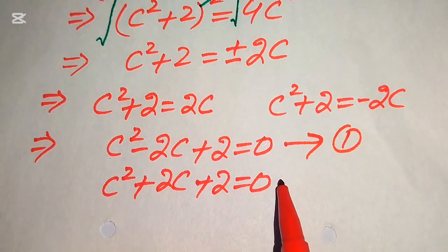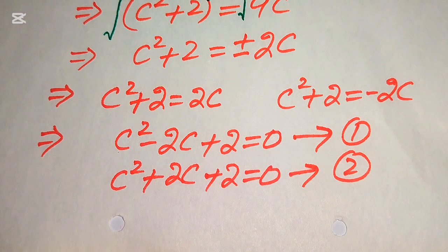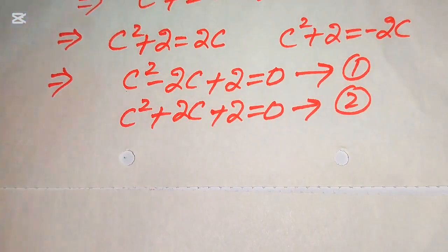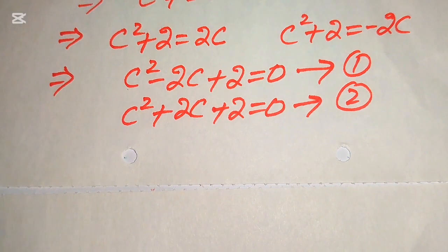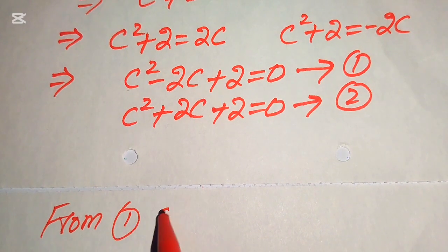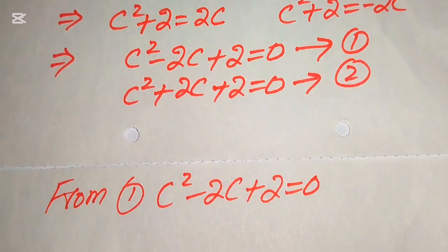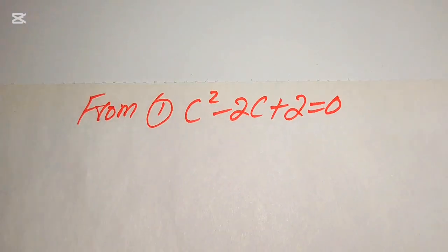We call the first equation number 1 and the second equation number 2. Now we need to solve these two equations simultaneously for the values of c. First we focus on equation number 1: c² - 2c + 2 = 0.